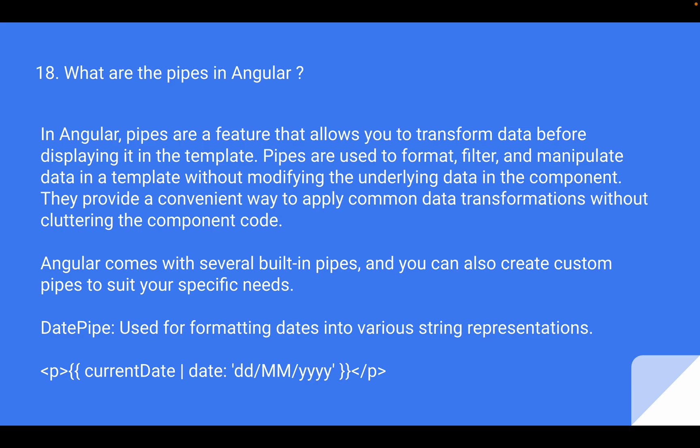There are also uppercase pipes, which transform text to uppercase. Then there are currency pipes, which format a number as a currency string based on the currency locale. Then there are decimal pipes, which format a number as a decimal string, and so on. Additionally, you can create your own custom pipes to perform specific data transformations that are not covered by the built-in pipes.